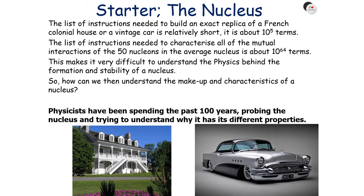The list of instructions needed to build an exact replica of a French colonial house or a vintage car is relatively short — about 10 to the 5 terms — but the list of instructions needed to characterise all the mutual interactions of the 50 nucleons in the average nucleus is about 10 to the 64 terms. This makes it very difficult to understand the physics behind the formation and stability of a nucleus. Physicists have been spending the past 100 years probing the nucleus trying to understand its different properties.